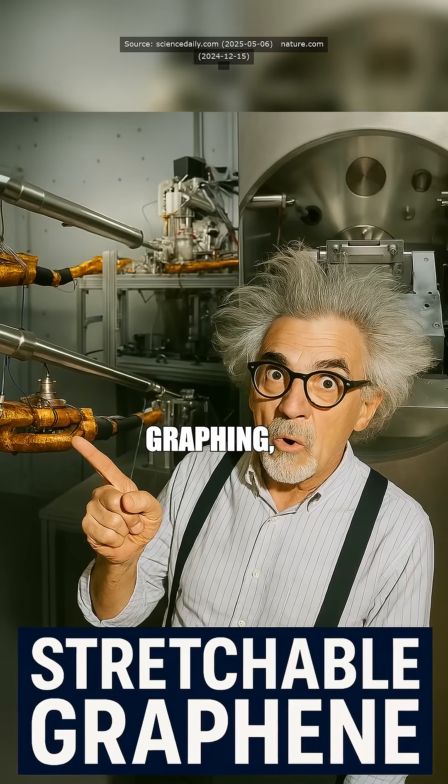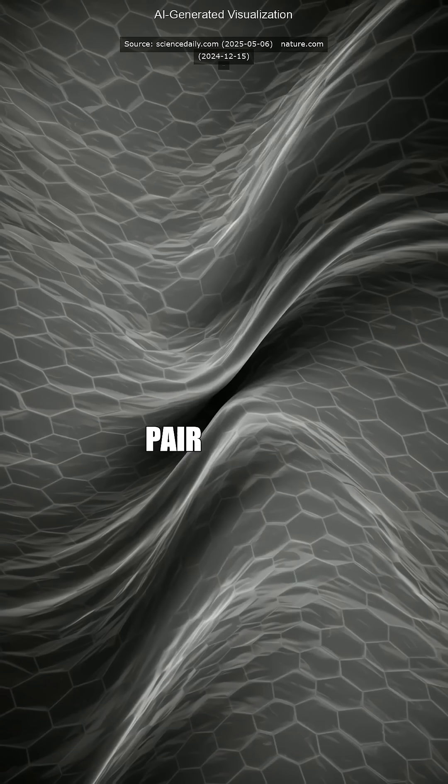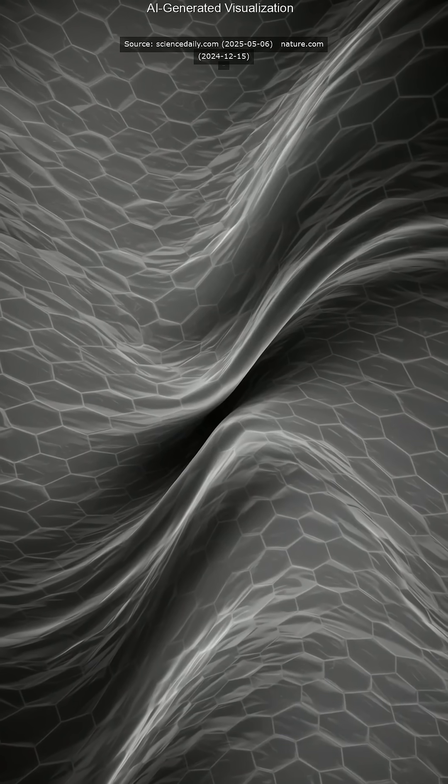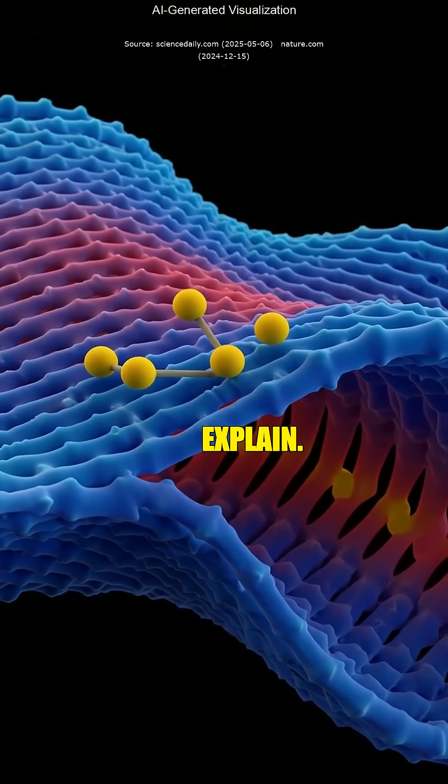Ever wondered how graphene, the world's strongest material, could become stretchy like a pair of yoga pants? Bloody hell, stretchy graphene? Sounds like sci-fi leggings. Please explain.